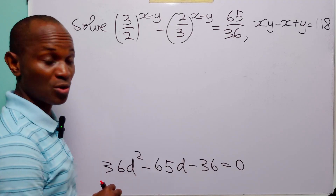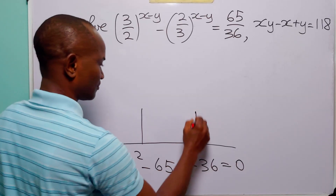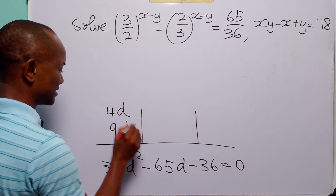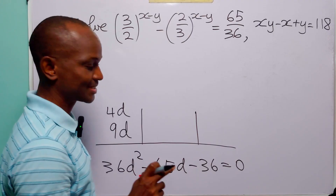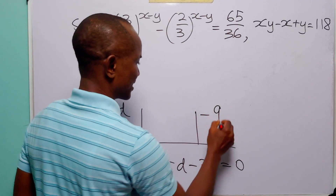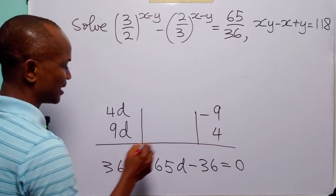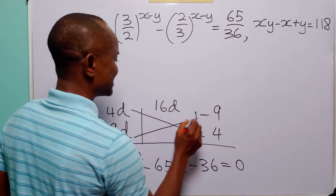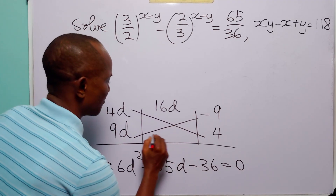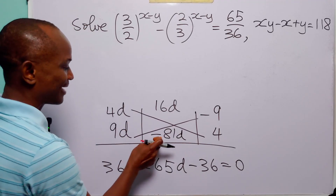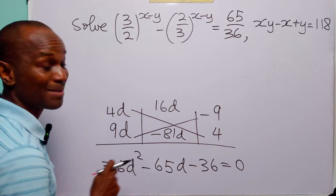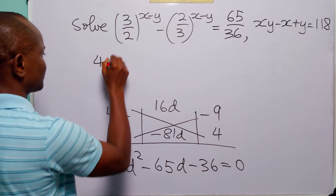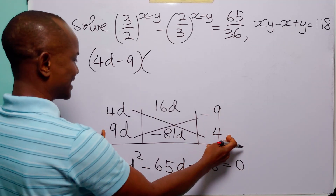Now we can factorize this quadratic equation. Let us use the table method. The factors of 36d squared are 4d and 9d, and the factors of minus 36 are minus 9 and 4. We have 4d times 4 which is 16d, and 9d times minus 9 which gives us minus 81d. Now, minus 81d plus 16d gives us minus 65d. So the factors of this quadratic equation are 4d minus 9 and 9d plus 4.